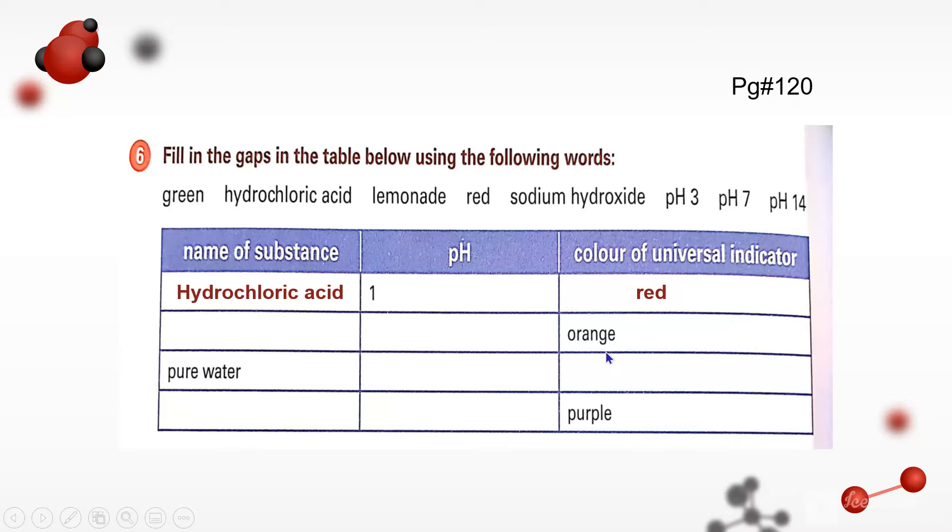Now, orange is the universal indicator. So its pH is more than 1, and that will be lemonade. And the pH will be 3.